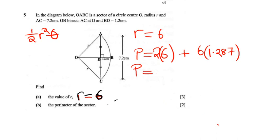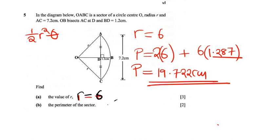Just keep analyzing and seeing what you can do at every point. This is helping us find the arc length: 6 times 1.287. So the perimeter is 2(6) plus 6 times 1.287, giving 19.722 centimetres. That's our answer for this question.